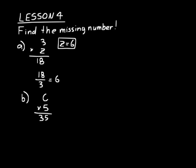Let's try the next problem. Remember, pause on the second and subsequent problems to see if you can figure them out on your own before looking at the lesson. We have c times 5 equals 35 — or, what times 5 equals 35? Hopefully you already know that 7 times 5 equals 35, so c equals 7. If you didn't know that, you can use fact families: 35 divided by 5 equals 7, so c equals 7.